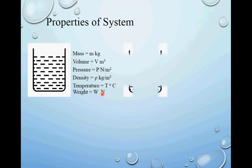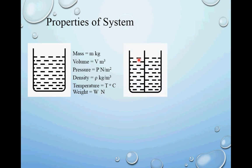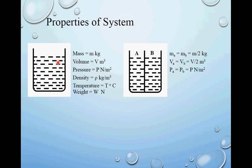Now if I divide the system into two equal parts by inserting a vertical partition, naming them part A and part B, let us see what happens to the various properties. Mass of part A and part B will each be half of the original — m by 2. Volume of part A and part B will also be half of the original — v by 2.